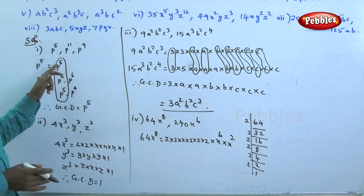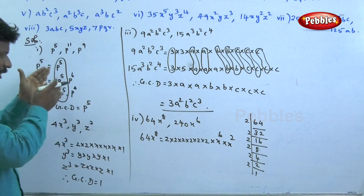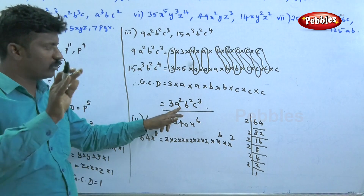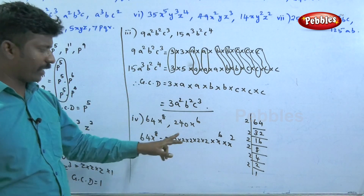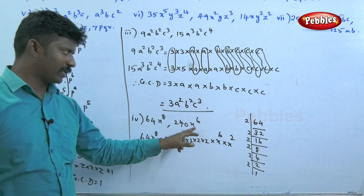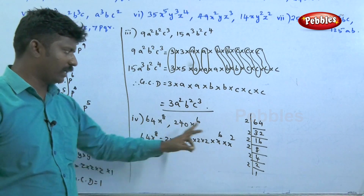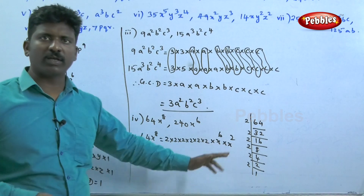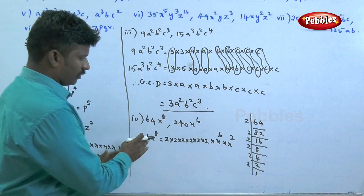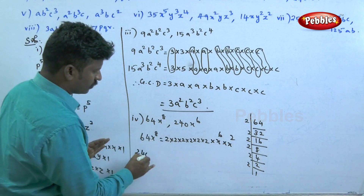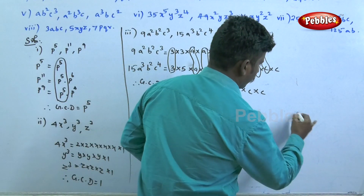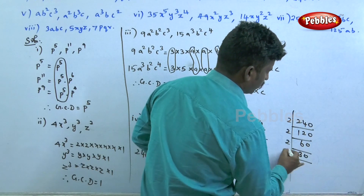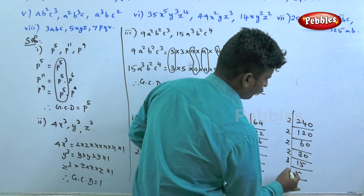For the variable x, the minimum power between x^8 and x^6 is x^6, so x^6 is taken. Now for 240x^6: we factorize 240 as 2 × 2 × 2 × 2 × 3 × 5 × x^6. The common numerical factor between 64 = 2^6 and 240 = 2^4 × 3 × 5 is 2^4 = 16.